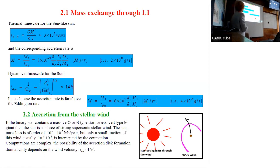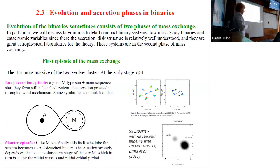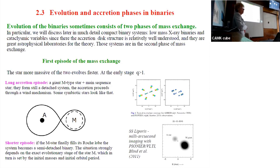We will concentrate on cataclysmic variables and low-mass X-ray binaries because they are simpler. A few words on how they form — this is really quite complicated. The evolution of binaries sometimes, or actually always in cases of interest for us, proceeds through two phases of mass exchange.